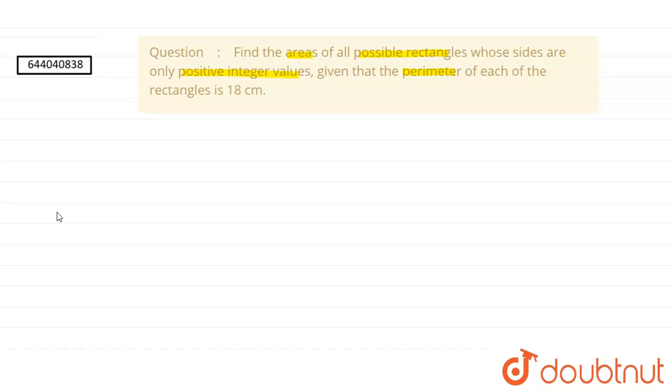So since we know that the formula of perimeter of rectangle is: perimeter of rectangle equals two times the sum of length and breadth. This is the formula of perimeter of rectangle.